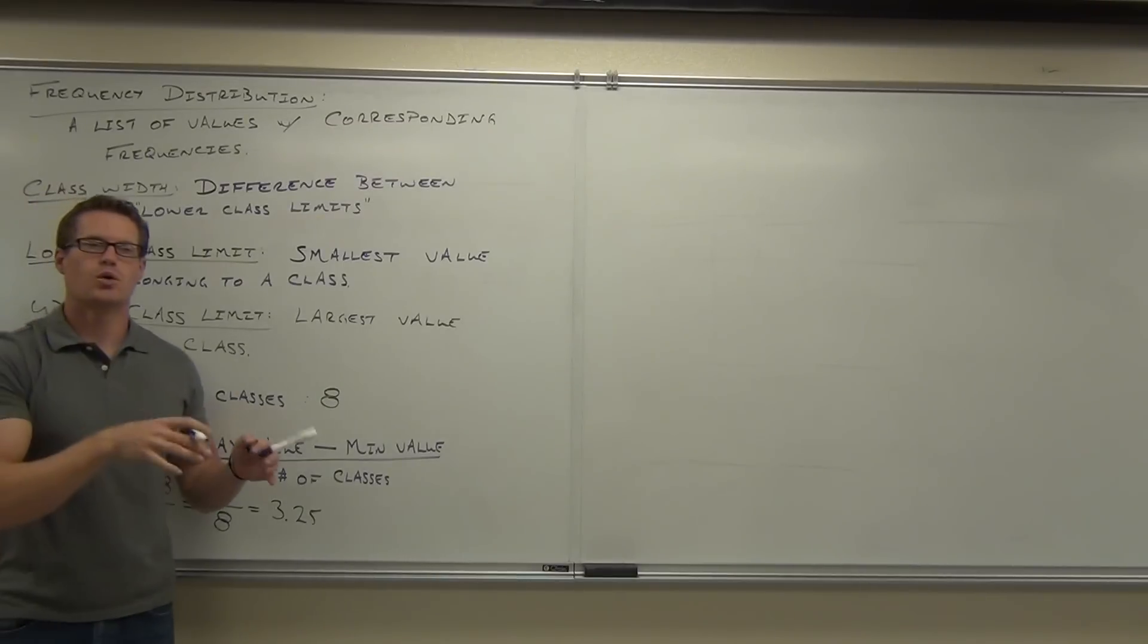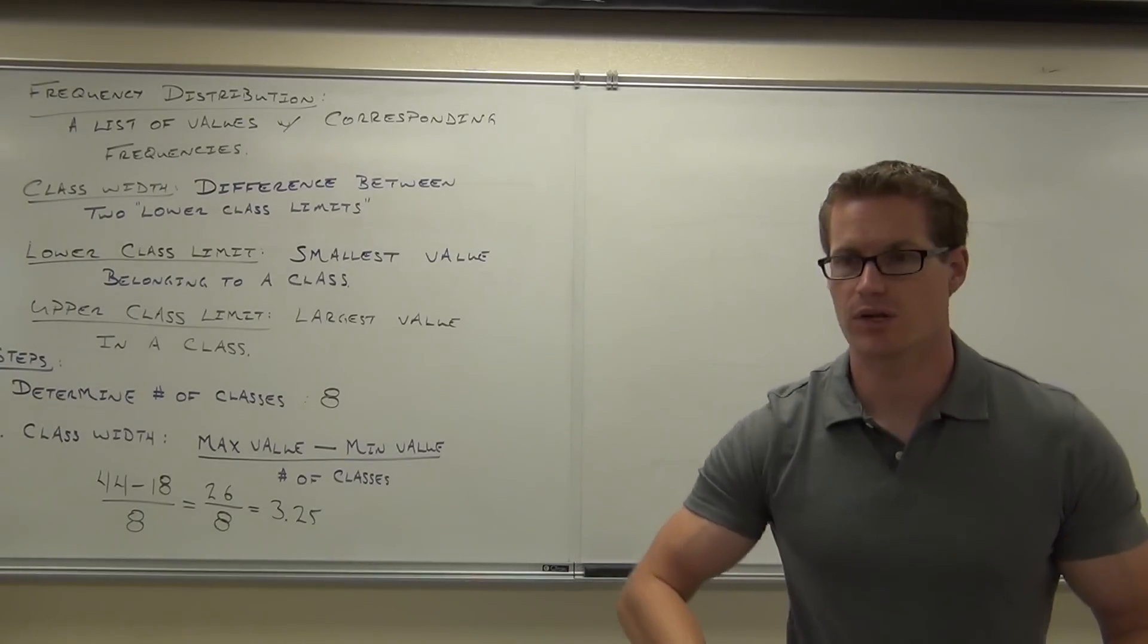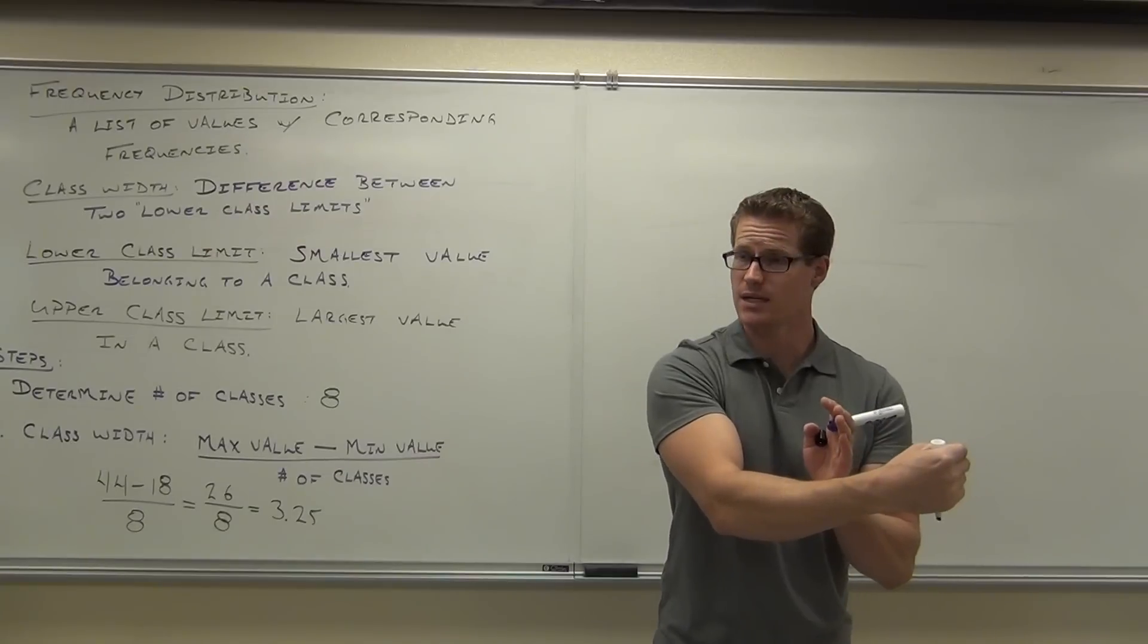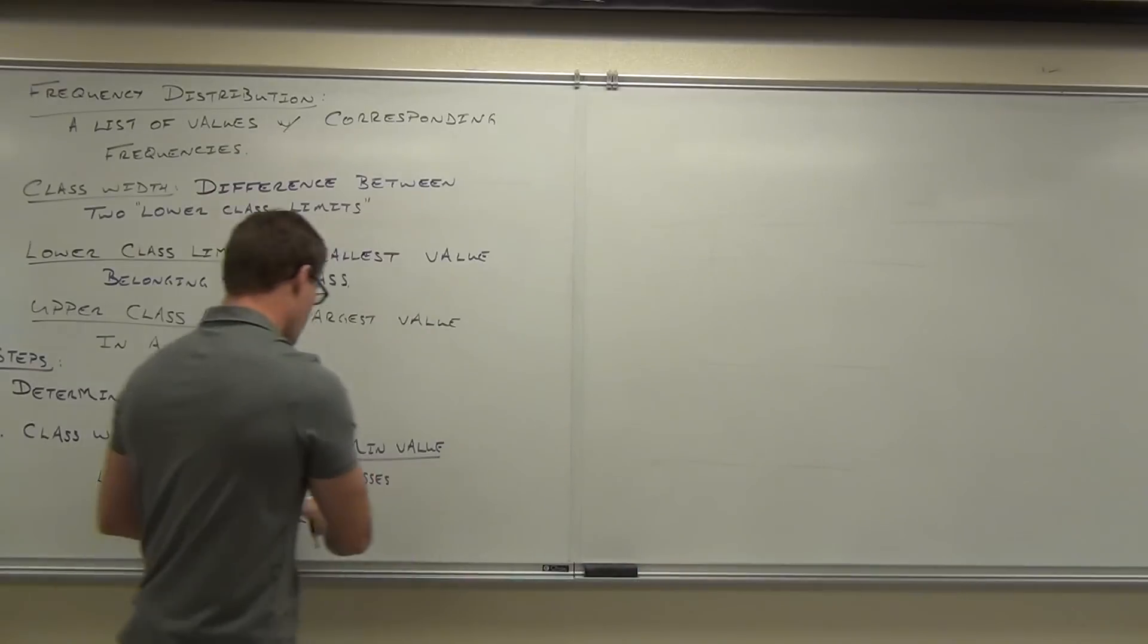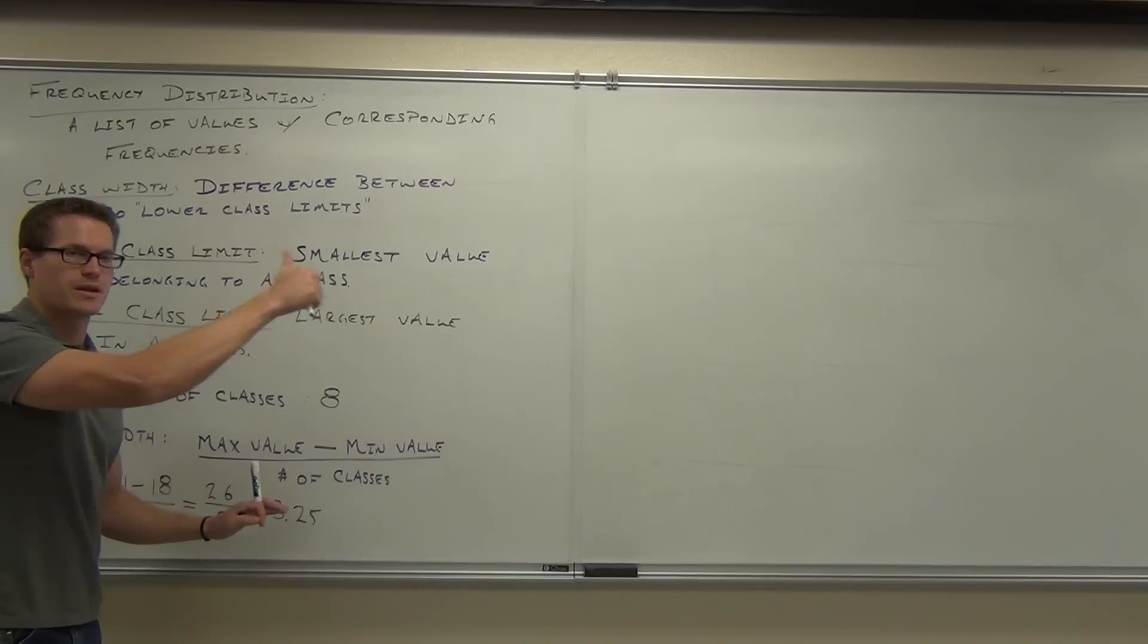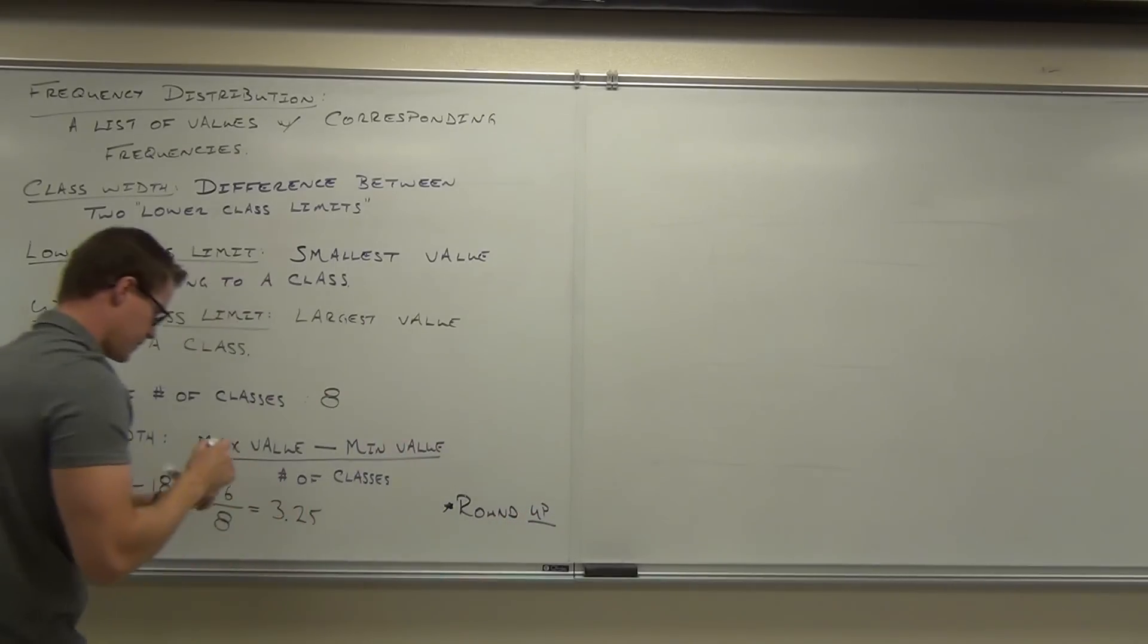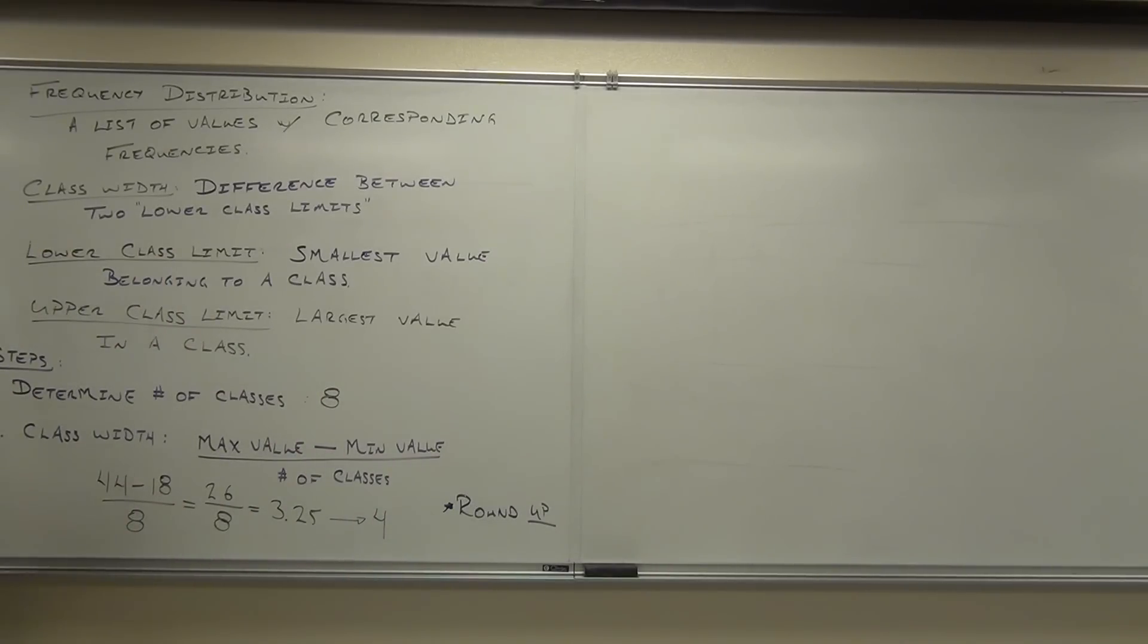Your class width has to be a whole number. So here's what you're going to do. No matter what the decimal is, if you have a decimal, you are going to round upwards. If you round downwards, you're not going to have enough room for everybody in your sample. You'll have 8 classes, but it'll stop too short, and you'll have to make another class. If you want 8 classes, you need to round up. That'll cover everybody. Do you see why? Even though it's 3.2, that rounds to 3. Well yeah, but in statistics, when we need a certain number of classes, we're going to round that up. It's going to go to 4. So this is going to become 4. Our class width is going to be 4 for our example.